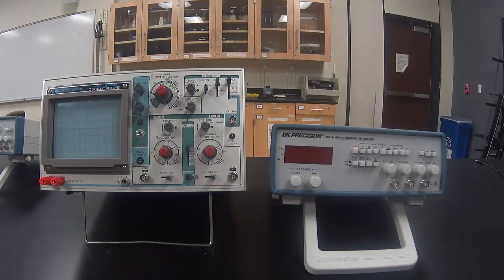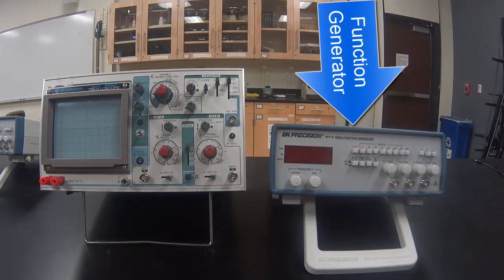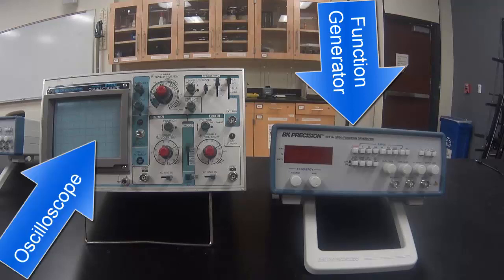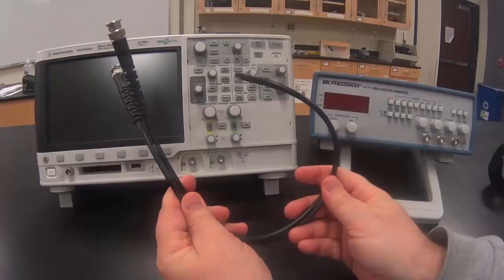Introduction to the Oscilloscope Part A. The function generator will be used to create the signal and the oscilloscope will be used to measure the signal. We will be connecting the devices with a BNC cable, also known as a coaxial cable.